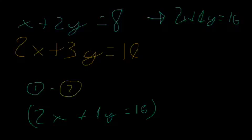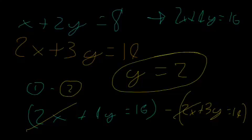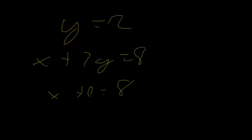Now we subtract equation 2 from the modified equation 1: (2x + 4y) - (2x + 3y) = 16 - 14. The 2x terms cancel out, and 4y - 3y = y, so y = 2. Substituting back: x + 2(2) = 8, so x + 4 = 8, giving x = 4.